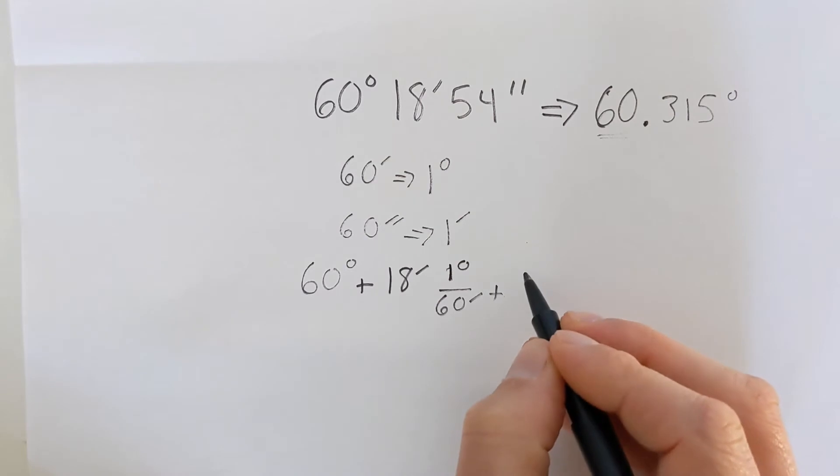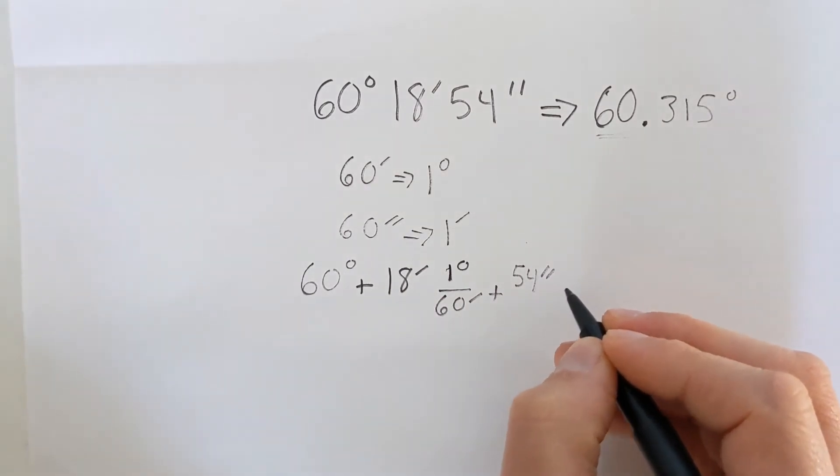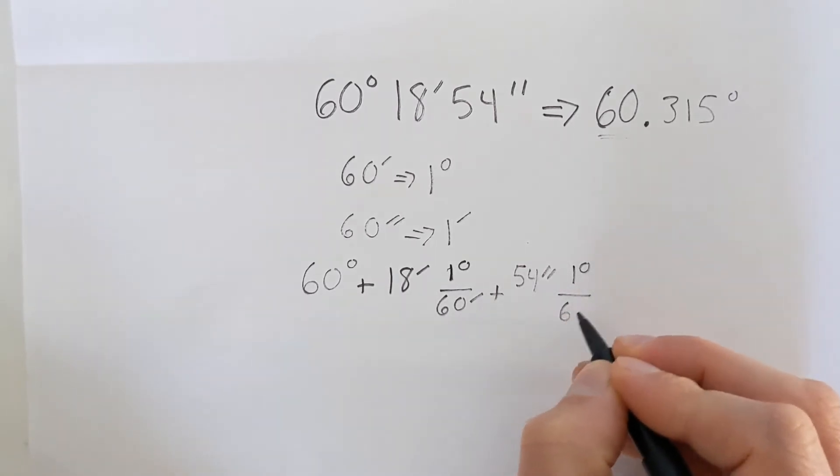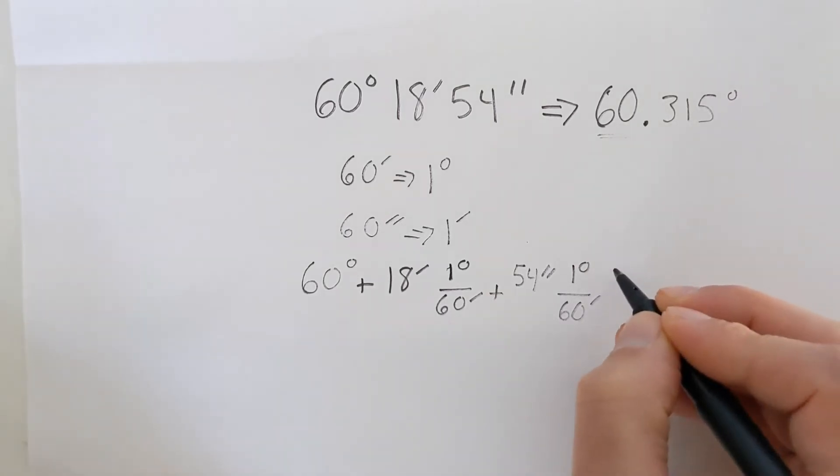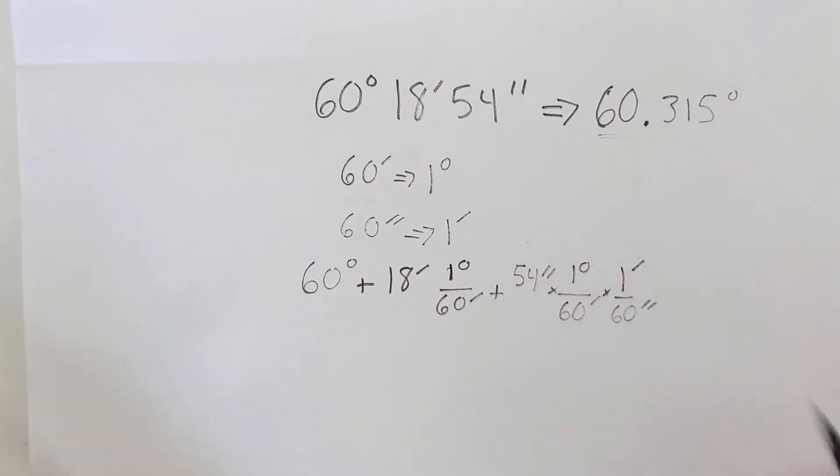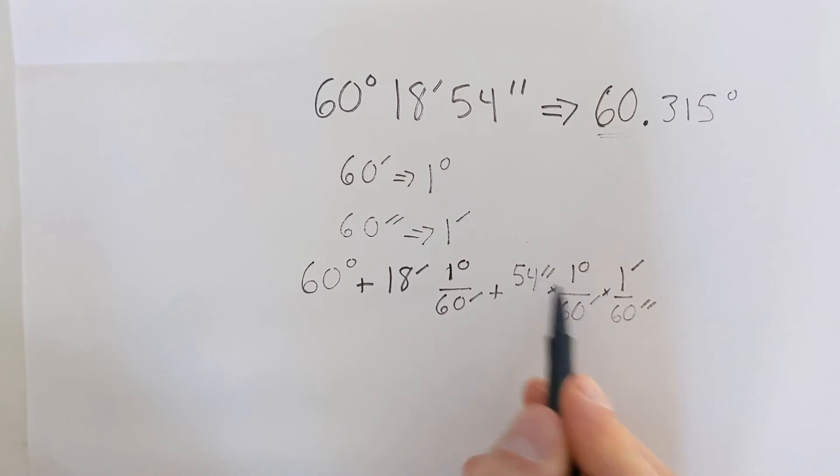And then we're going to add our seconds here. So we have 54 seconds, and we're going to do this in two stages. We know that we have one degree equal to 60 minutes, and then we also know that one minute is equal to 60 seconds.